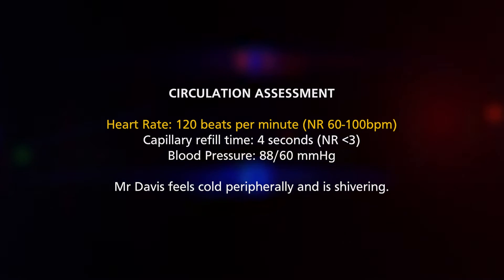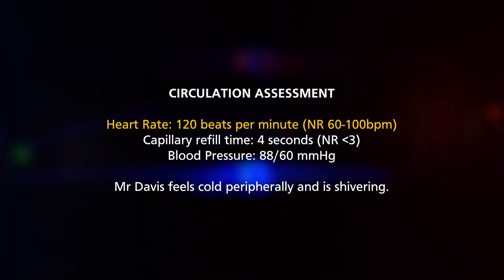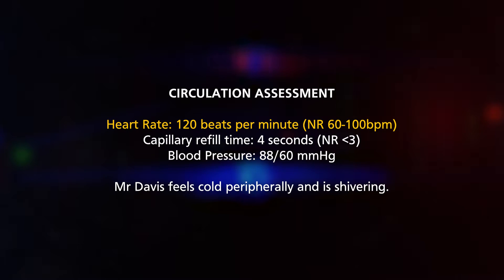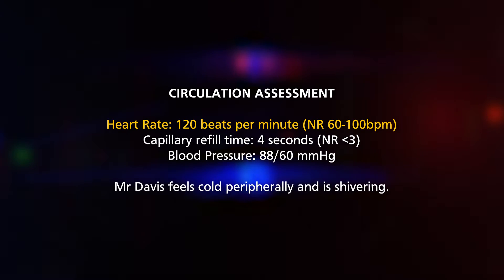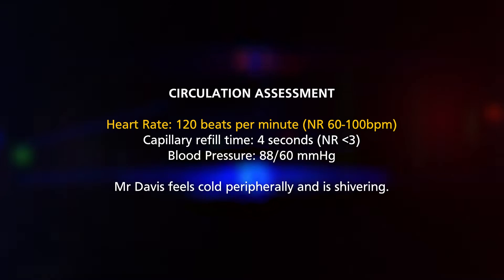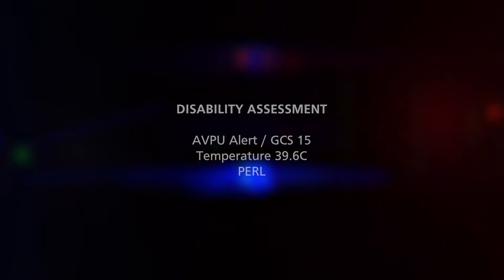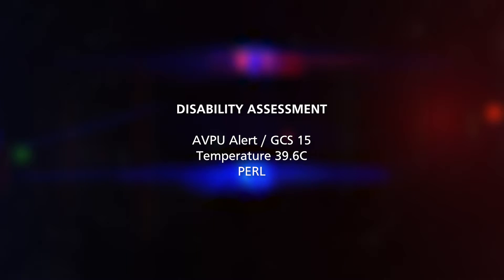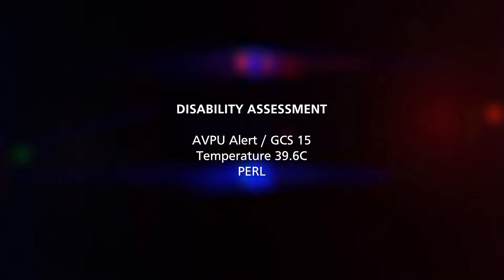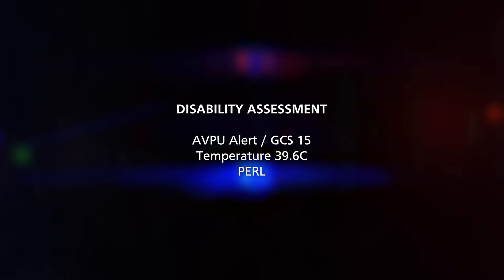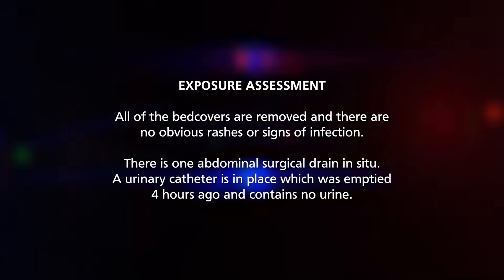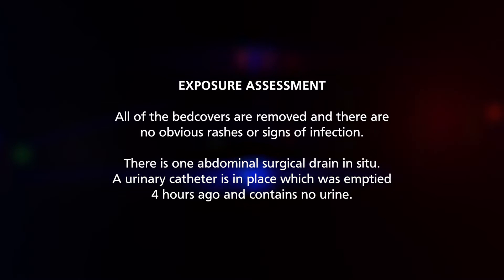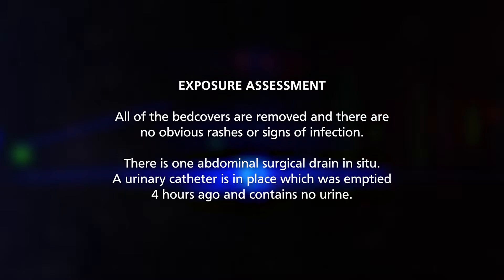Moving on to circulation: he has a heart rate of 120 beats per minute — tachycardic — a blood pressure of 88/60, a capillary refill time of 4 seconds, and he feels cold peripherally. Moving to D: pupils are equal and responsive to light, GCS 15, and a temperature of 39.6 degrees Celsius. Finally, E for exposure: there are no obvious skin changes, there is one surgical drain in situ, and Mr. Davis has a urinary catheter in place following his surgery.